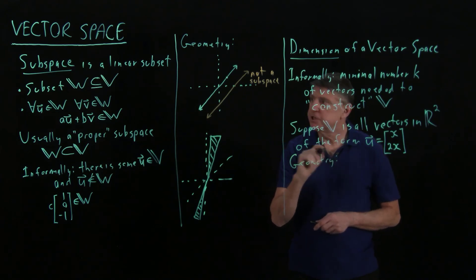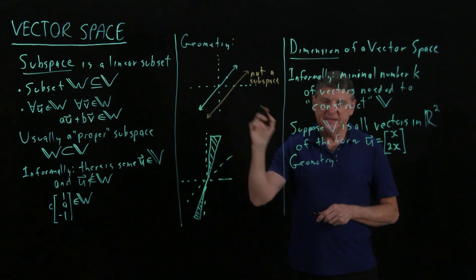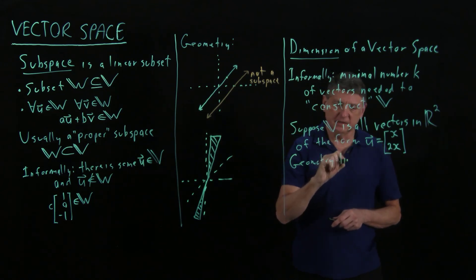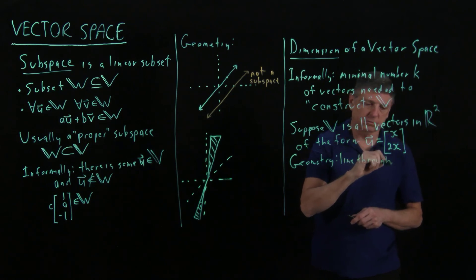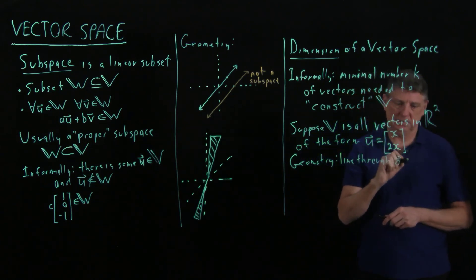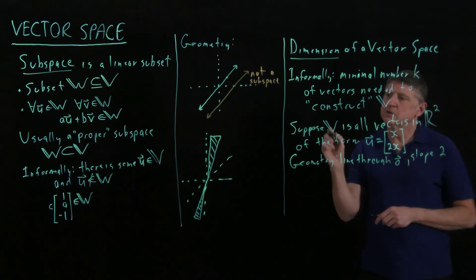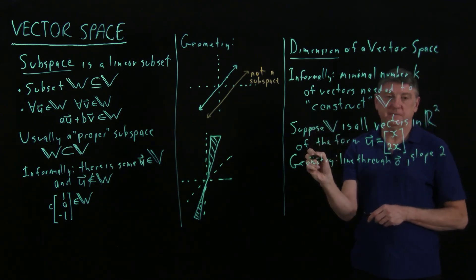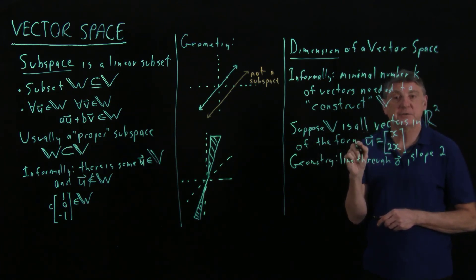So what is the geometry? So the geometry, if we consult a diagram like this, is this, this is a line that goes through the origin, and it has a slope of 2. So this is a constructive way. I'm giving you a rule by which you can construct vectors that are in the vector space.